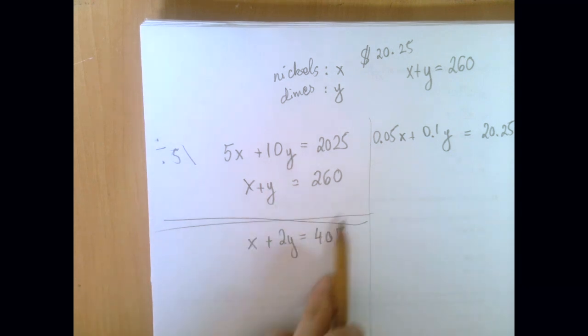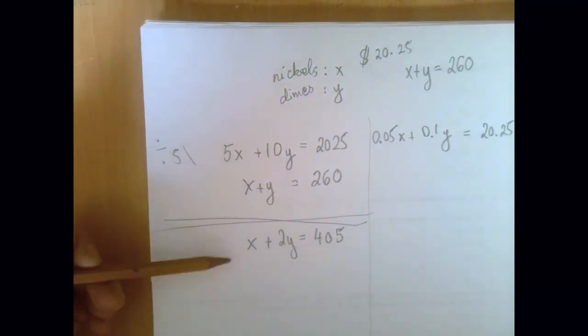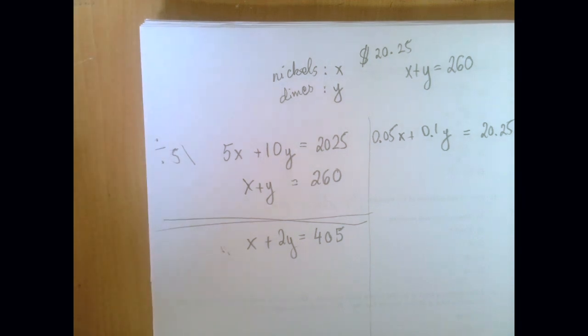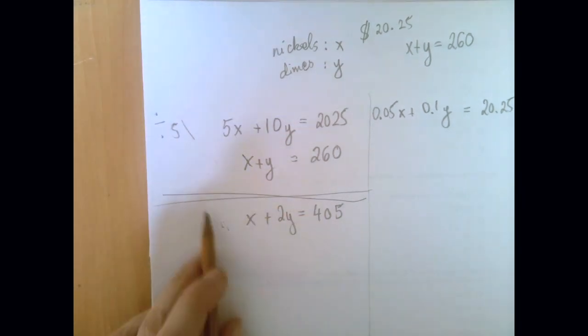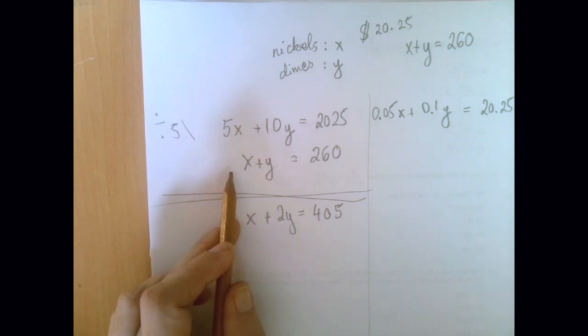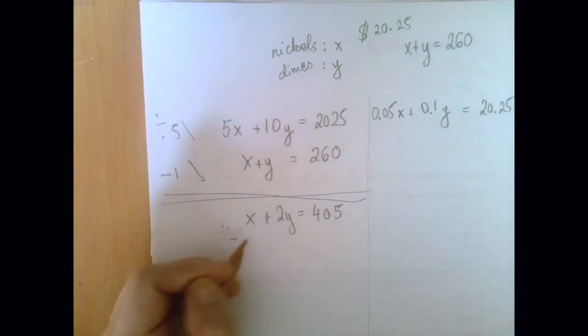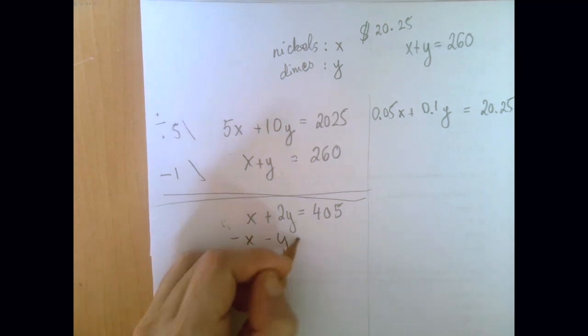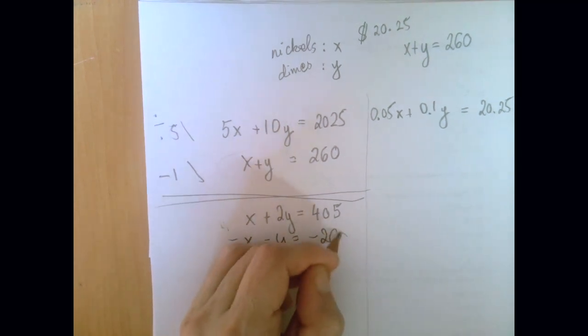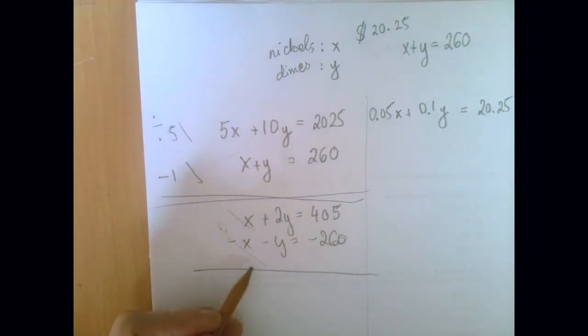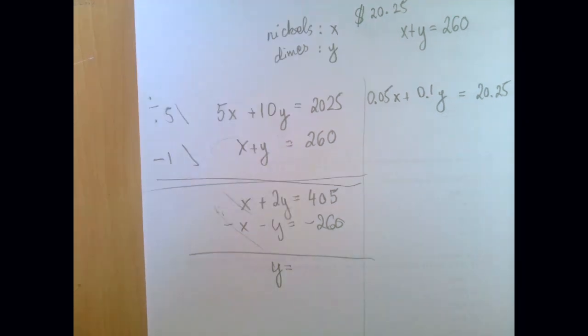So now, x plus 2y equals 405, x plus y equals 260. If we just subtract the first equation from this new second one, x will cancel out and y literally falls into our lap. But instead of subtracting, we're going to add the opposite, so we're going to multiply this equation by negative 1 to get negative x minus y equals negative 260. And so x cancels out, y is expressed,